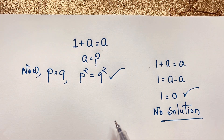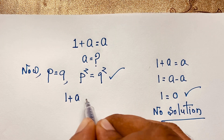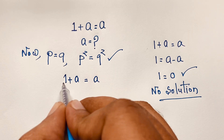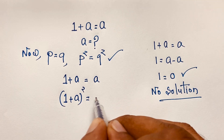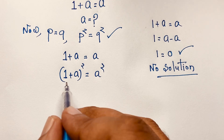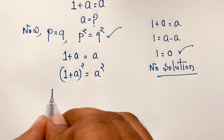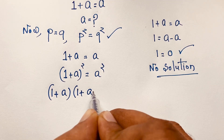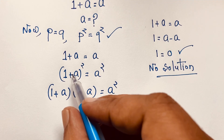So applying this case here, 1 plus a is equal to a — if I use both sides squared, it becomes 1 plus a bracket to the power 2 is equal to a to the power 2. Now 1 plus a whole to the power 2 is 1 plus a times 1 plus a, and this is a squared.